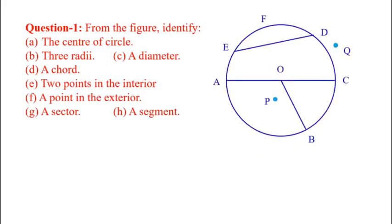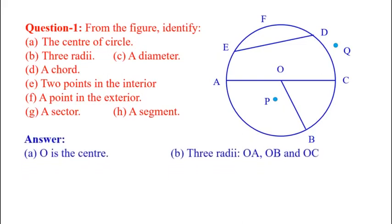So, this is the diagram. We have to identify all this. So first, O is the center. Second, 3 radii are OA, OB and OC.